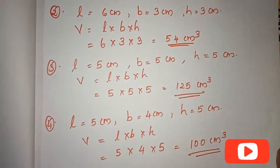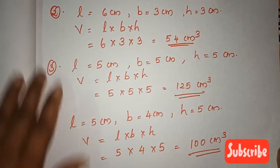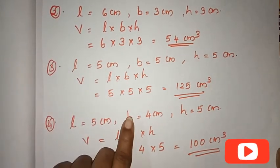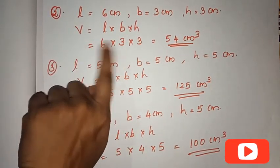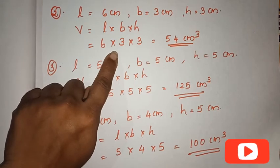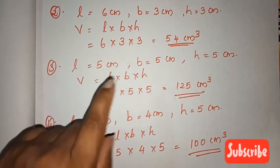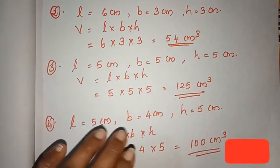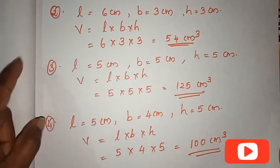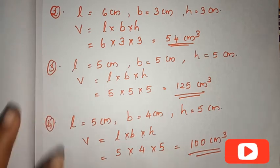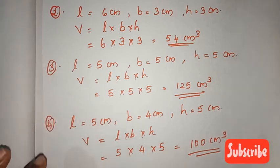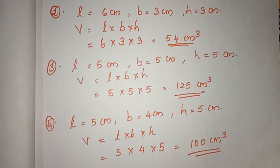So how did we do this? We have the length, breadth and height, we have the formula, and we calculate the volume. The formula is length × breadth × height — easy and simple. We will solve the next question.